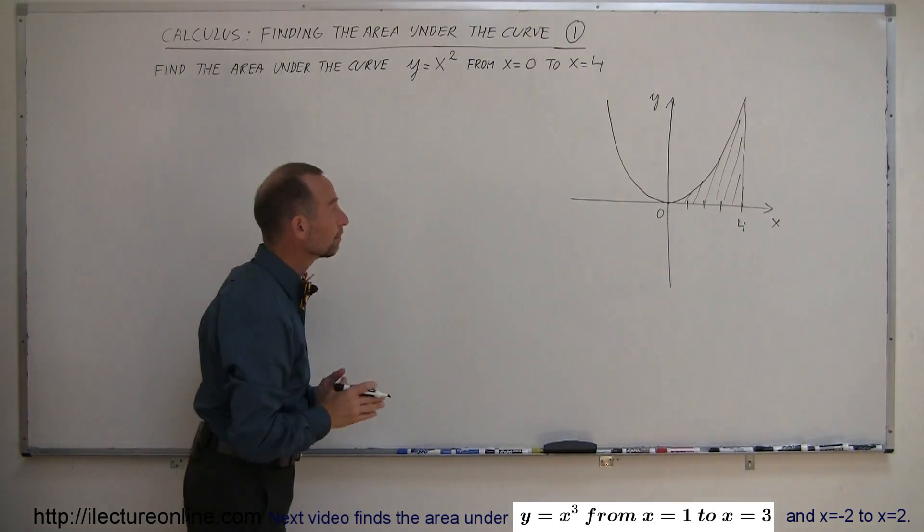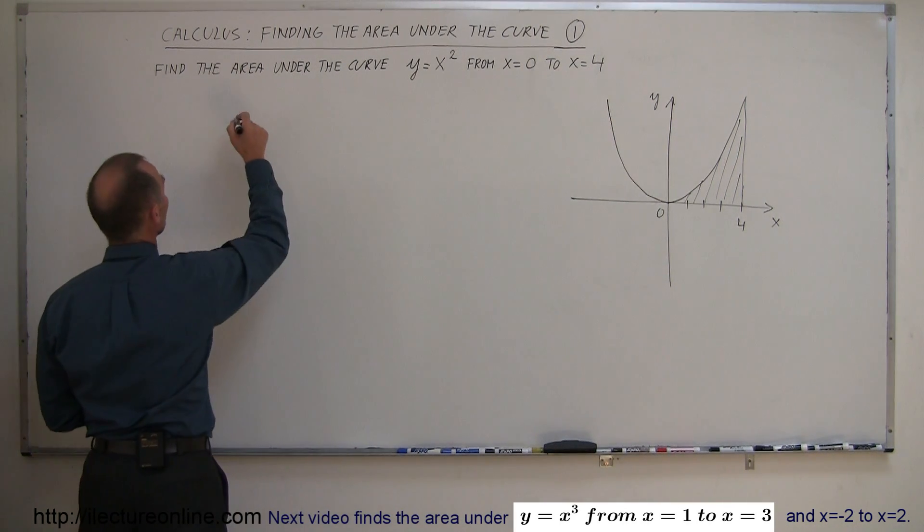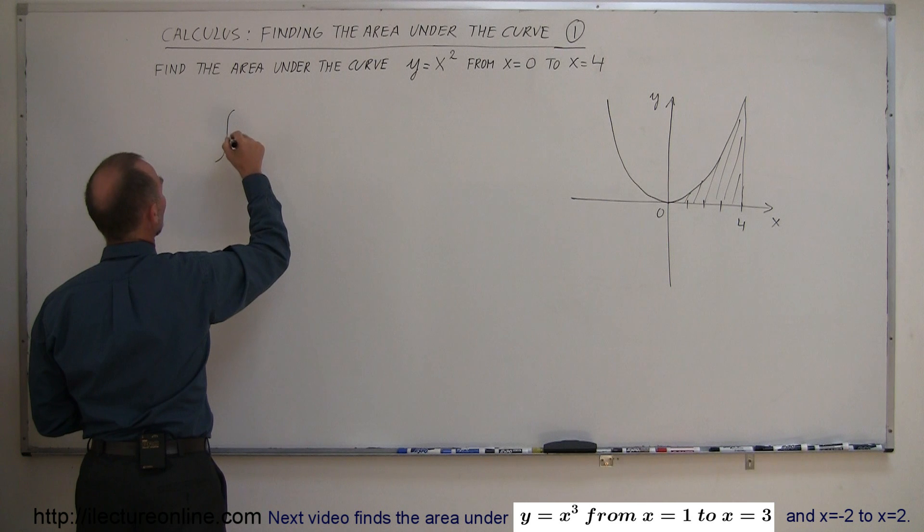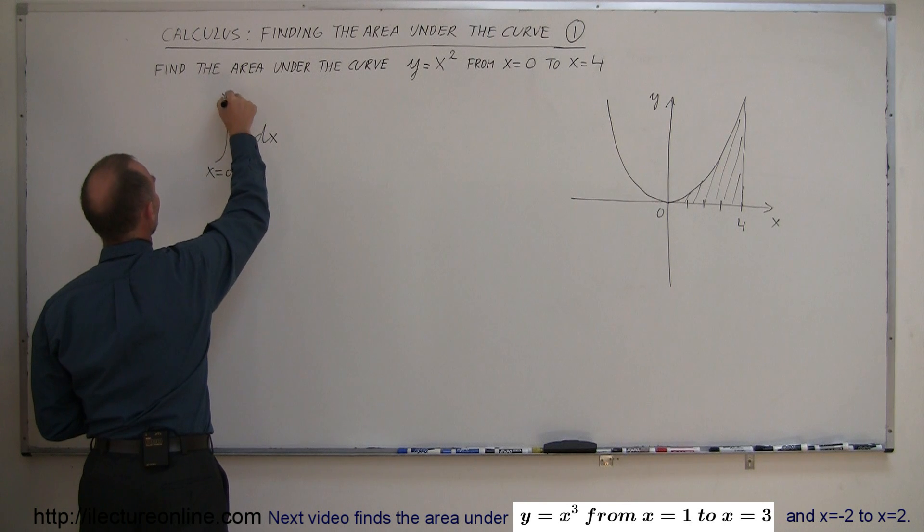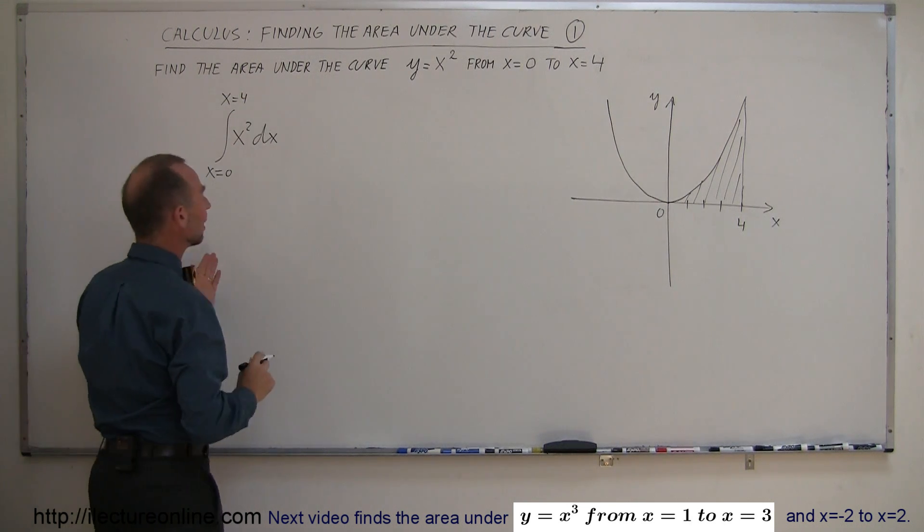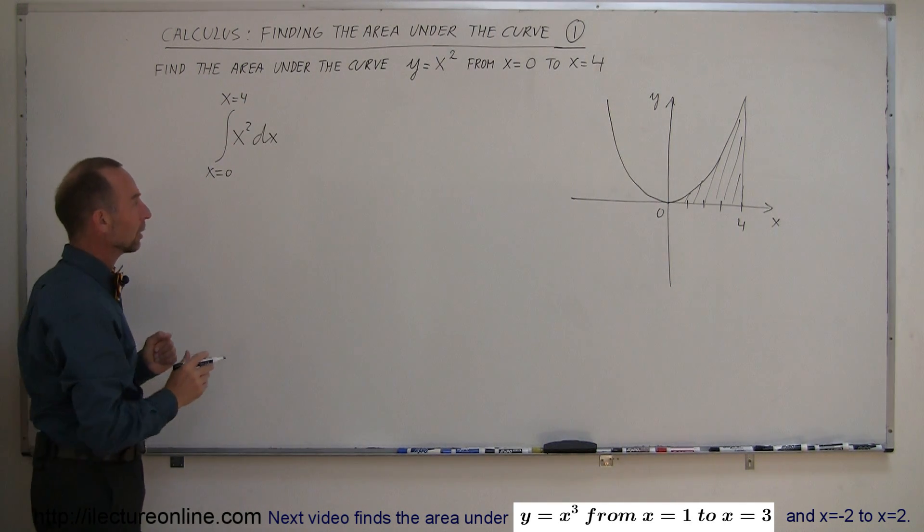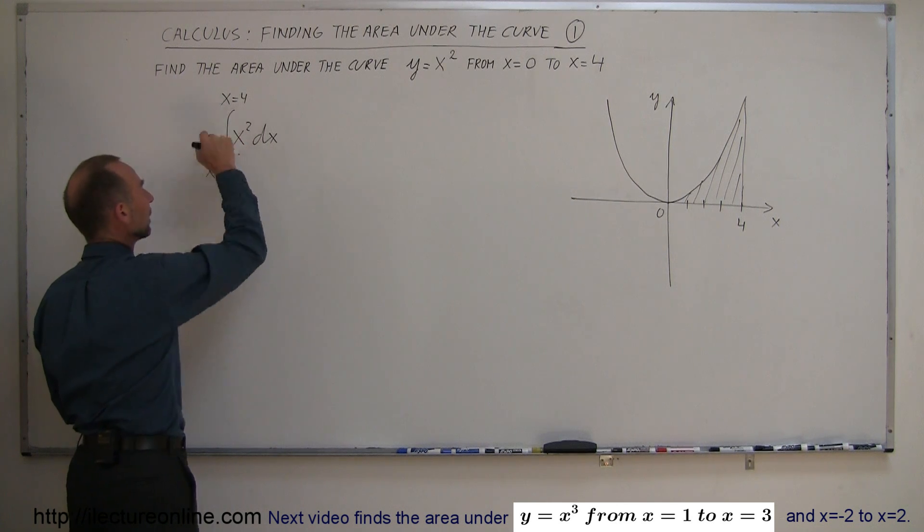How do we find that area? We take the integral of that equation, so we take the integral of x² dx and we place the limits from x = 0 to x = 4. So we have a definite integral of the function and we integrate it from 0 to 4, lower limit and upper limit.